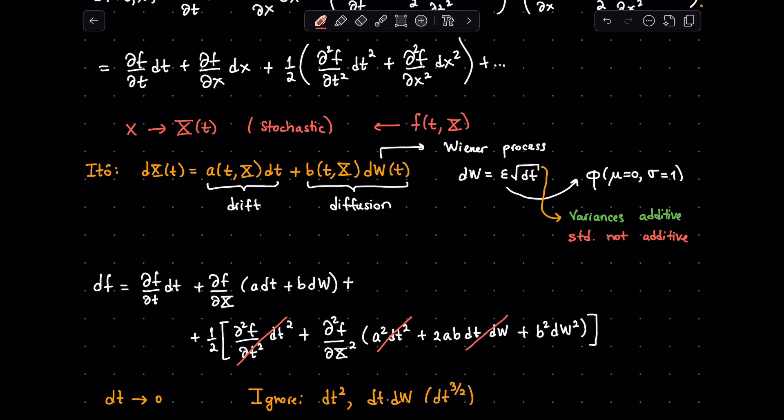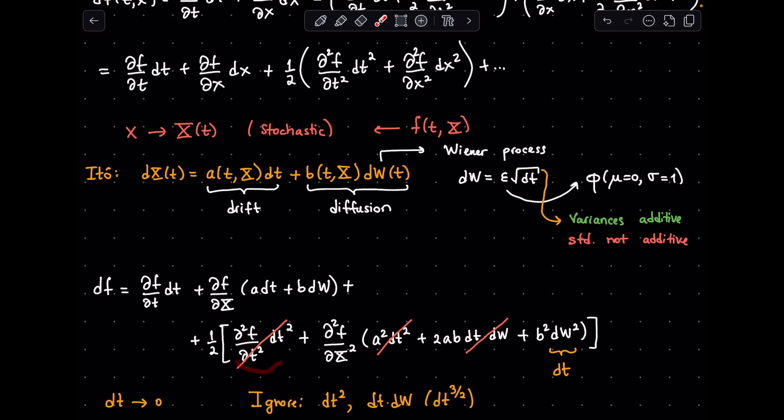What do we do about the dw squared term? It turns out that we can simply replace it with dt. It intuitively makes sense, as dw is proportional to square root of dt, so dw squared should be proportional to dt, but let's show that more thoroughly. This is actually the key point in the derivation, as dw squared cannot be simply ignored as the other quadratic terms, as it can be shown that it can be replaced by dt here.